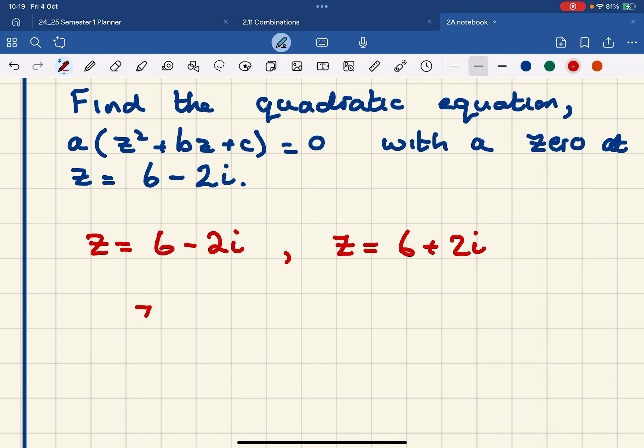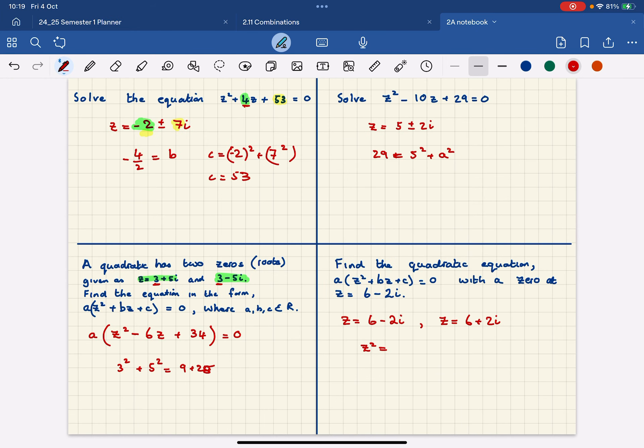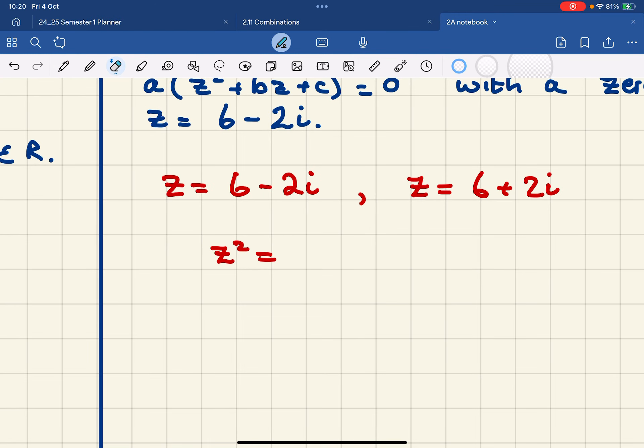So now I can say that z squared—I remember what I do with that first number. I went from 3 to minus 6, so I need to double that first number and make it negative. Minus 12z.